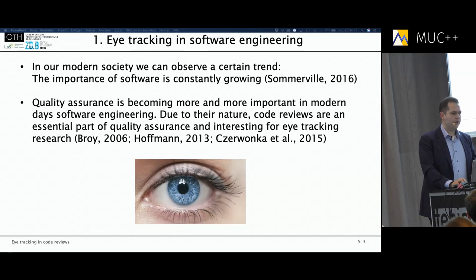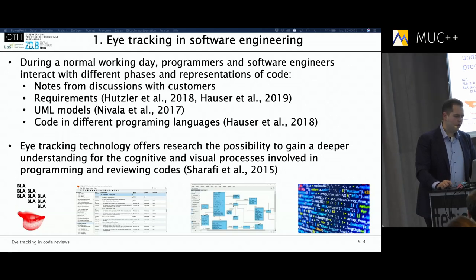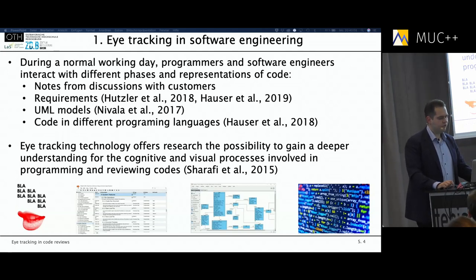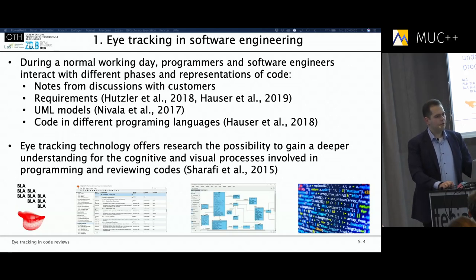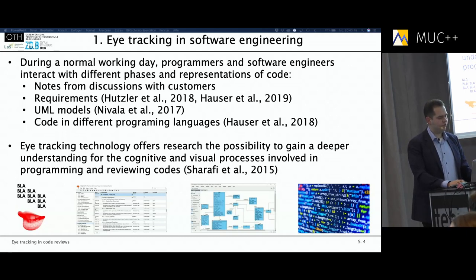This is also the topic we are mostly focused on — especially my PhD thesis, which is mostly focused on eye tracking and code reviews. So if we take a look at software engineering and think about a normal software product and how development is carried out, we see that programmers have to work with different kinds and representations of code.